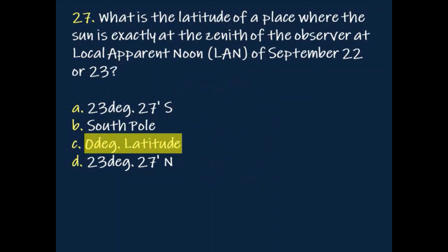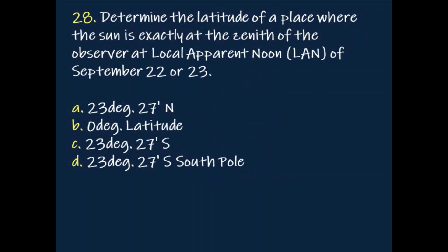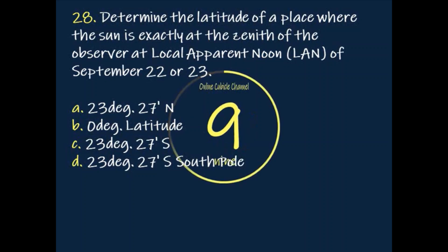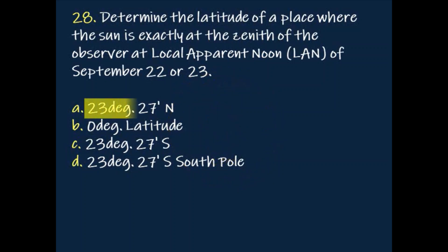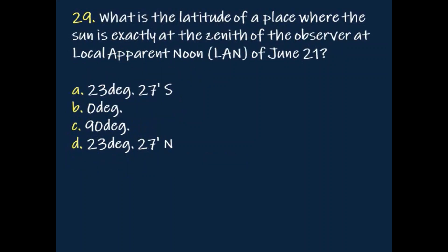Answer: Zero degrees latitude. Question: Determine the latitude of a place where the sun is exactly at the zenith of the observer at local apparent noon (LAN) of September 22nd or 23rd. Answer: 23 degrees 27 minutes north.